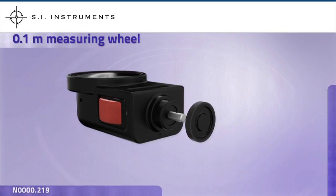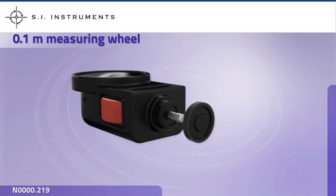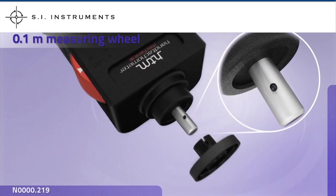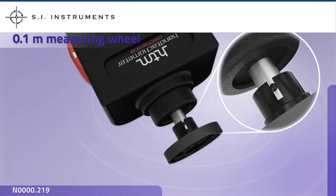To use any of the attachments simply slide them onto the measuring shaft of the tachometer, making sure to line up the contact adapter with the pin on the measuring shaft.